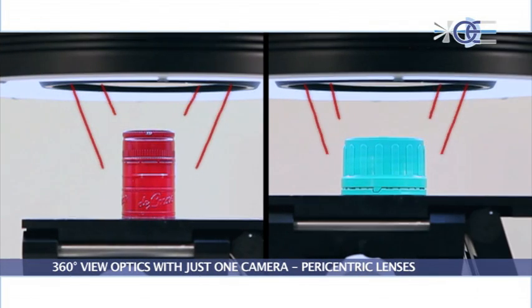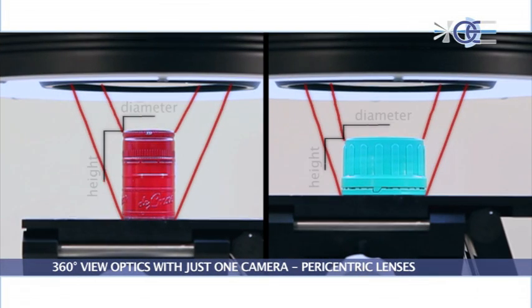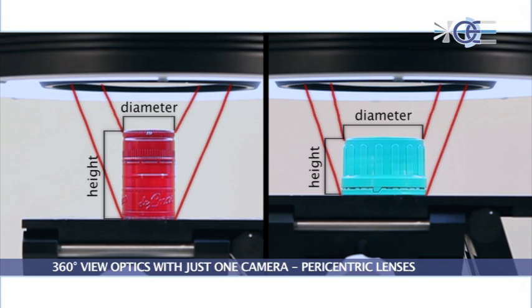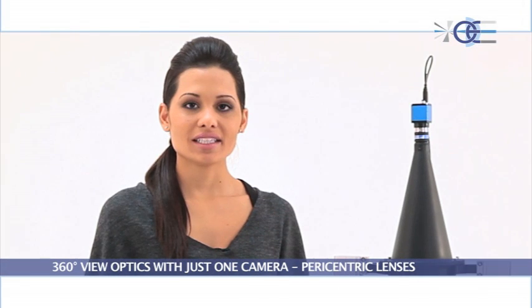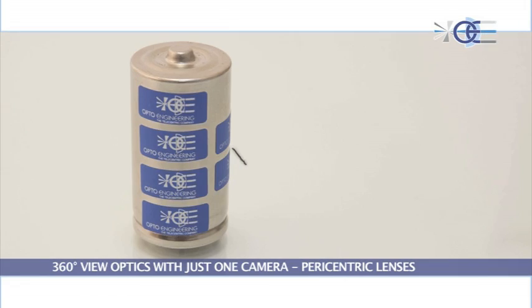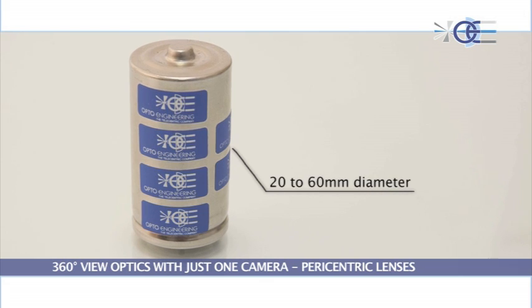The smaller the object diameter, the larger the object height which can be inspected, while thin objects can be inspected over a larger diameter. Typical object dimension size is 20 to 60 millimeters in diameter.